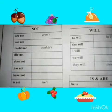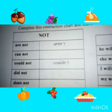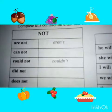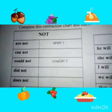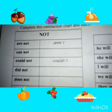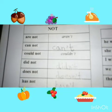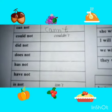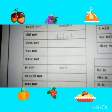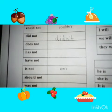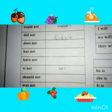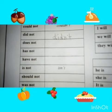Is not → isn't. Are not → aren't. Cannot → can't. Could not → couldn't. Did not → didn't. Does not → doesn't.